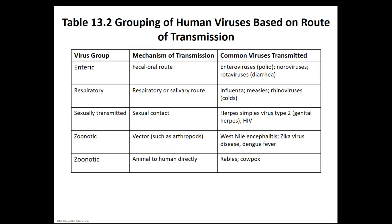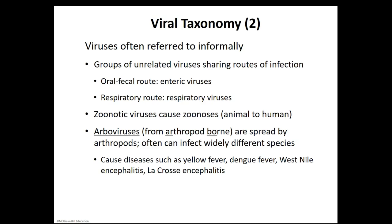Vector-borne viruses are usually transmitted via an arthropod such as a flea, tick, or mosquito, and can cause a multitude of encephalopathies. One common to southeast Louisiana would be West Nile encephalitis. To recap: the fecal-oral route for enteric viruses, the respiratory route for respiratory viruses, zoonotic viruses are always animal to human, and arthropod-borne transmission is another zoonotic-based viral route. Definitely focus on the viral group along with the means of transmission for that particular group.